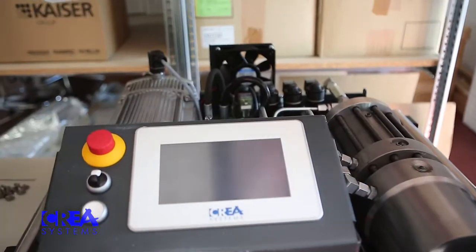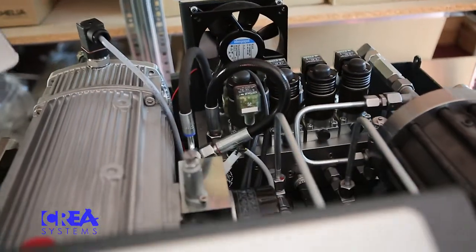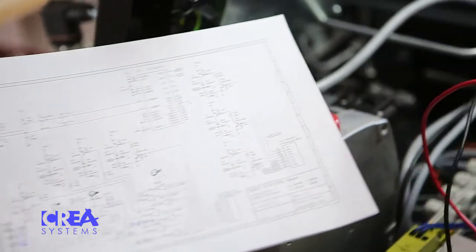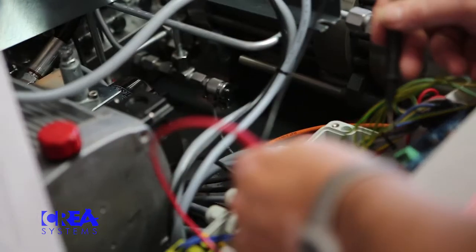As soon as the prototype is done, the complete product is connected to the control system. By means of a function test, we can find out if the programming meets the client's requirements.